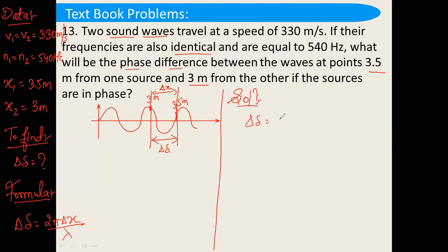Delta delta it is equal to 2 pi. Delta x will be, you can solve in data only. It is x1 minus x2. So, 3.5 minus 3. You can say it is 0.5 meter. So, this is 0.5 meter divided by lambda.